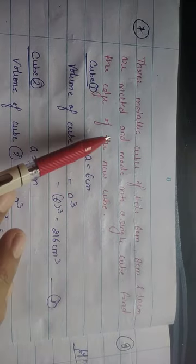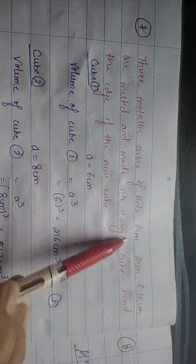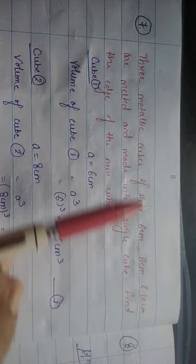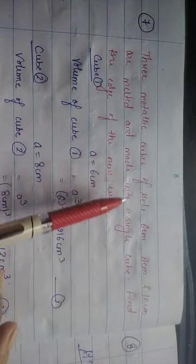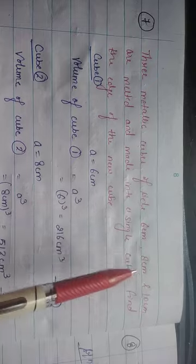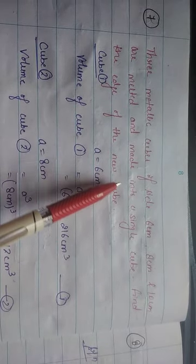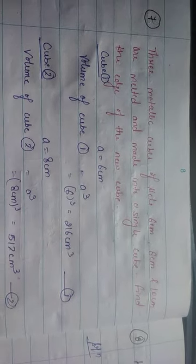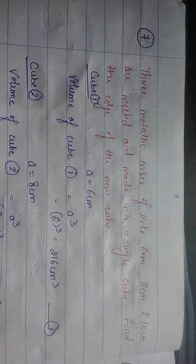Next question: Three metallic cubes of sides 6 cm, 8 cm, and 10 cm are melted and made into a single cube. Find the edge of the new cube. There are 3 cubes of different sides; they are melted and made into a single cube. When we melt something and reshape it, the volume remains the same.